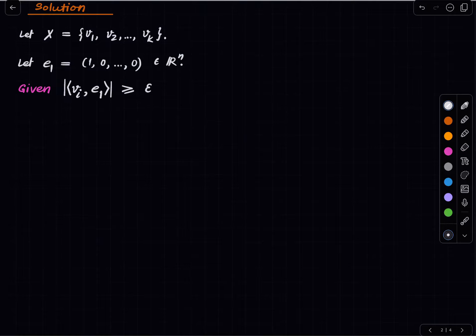Maybe I'll put a greater than equal to, maybe the question says greater than epsilon but let me put a greater than equal to. So we are given this and we want to bound the size of X meaning we want to come up with a bound on little k.